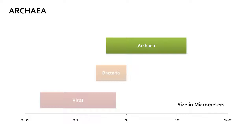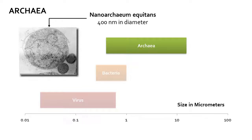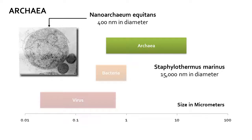Archaea exhibit even larger variations in size than viruses, with the smallest, Nanoarchaeum equitans, at about 400 nanometers — smaller than the largest virus — and the largest at 15 micrometers or 15,000 nanometers, visible under a magnifying glass.